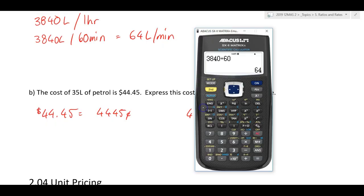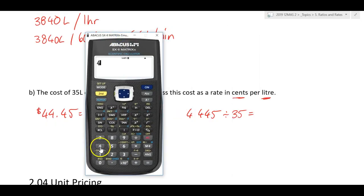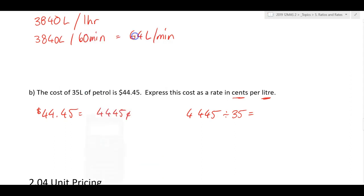Here we go. 4,445 divided by 35 equals 127. Equals 127 cents per litre. Like that.